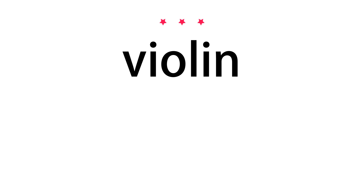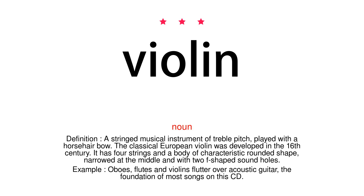Violin. Noun. Definition. A stringed musical instrument of treble pitch, played with a horsehair bow. The classical European violin was developed in the 16th century. It has four strings and a body of characteristic rounded shape, narrowed at the middle and with two F-shaped sound holes.